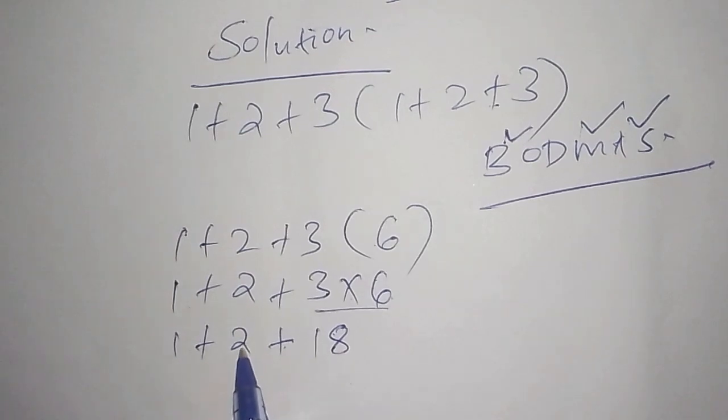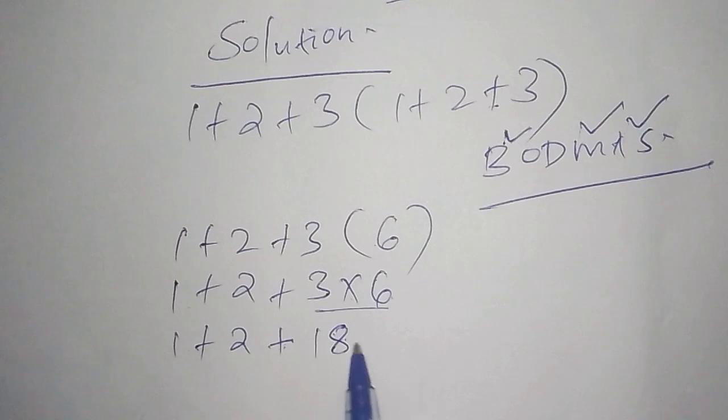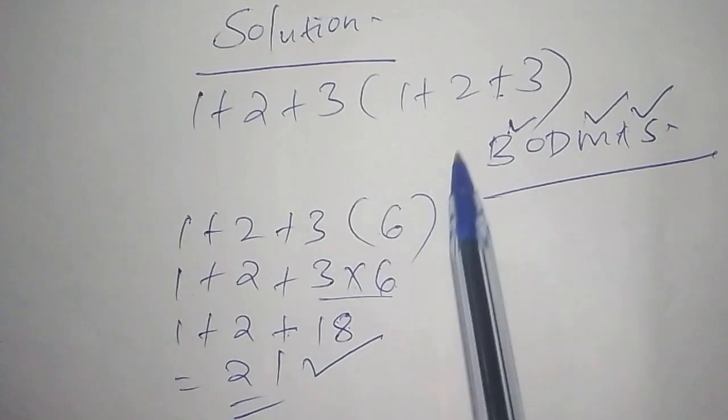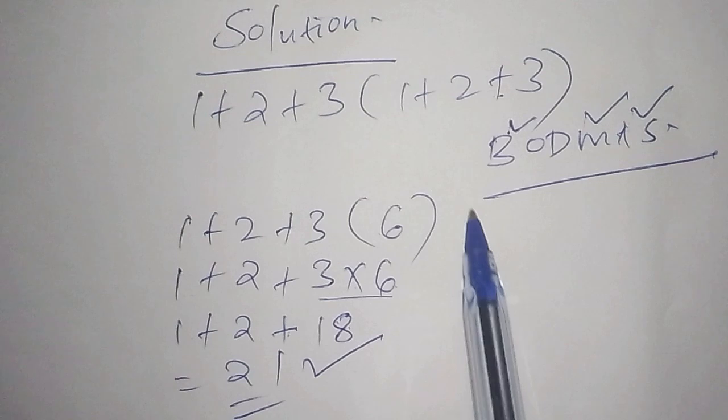We have addition here and addition here, so we have the A that stands for addition. So we are just going to add all these numbers together: 1 + 2 is 3, and 3 + 18 and our answer there shall be 21.